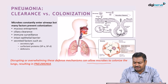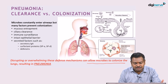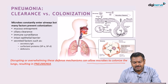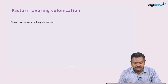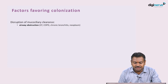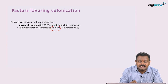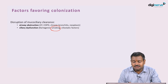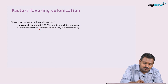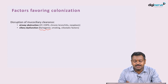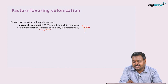Disruption or overwhelming of these defense mechanisms allows microbes to colonize, resulting in pneumonia. Mucociliary clearance can be disrupted by airway obstruction in COPD or bronchitis, neoplasms, or ciliary dysfunction. Smoking — the most important risk factor for pneumonia — causes ciliary dyskinesia. Congenital syndromes like Kartagener syndrome or Young's syndrome also cause primary ciliary dysfunction.